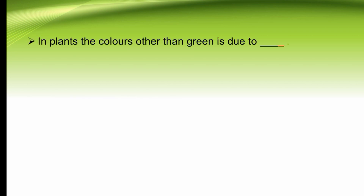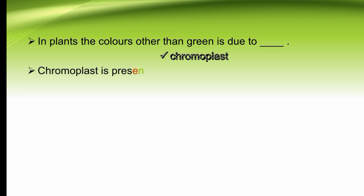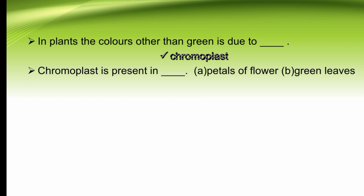In plants, the color other than green is due to dash. The color other than green in plants is due to chromoplasts. Chromoplasts are present in dash — petals of flowers or green leaves. Chromoplasts give colors other than green, so they are present in petals of flowers. The right option is A.